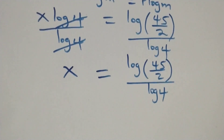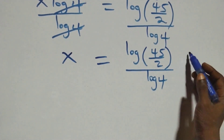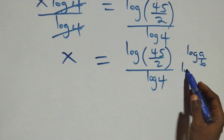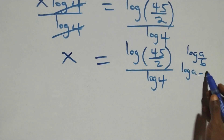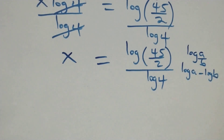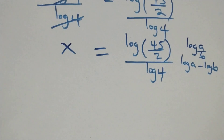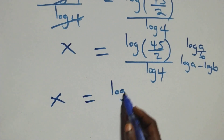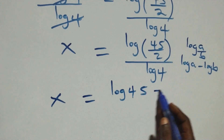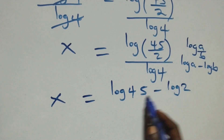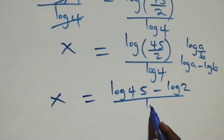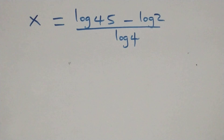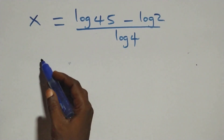This follows from the law of logarithms where log(a/b) equals log a minus log b. So x equals log 45 minus log 2, all divided by log 4.